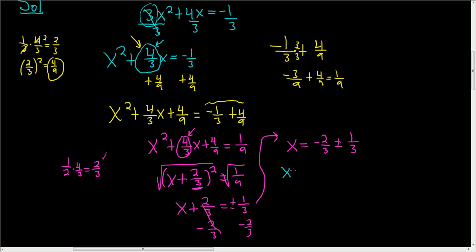Let's do the plus first. So x is minus 2 thirds, plus 1 third. That's going to give us minus 1 third. That's one of our answers.